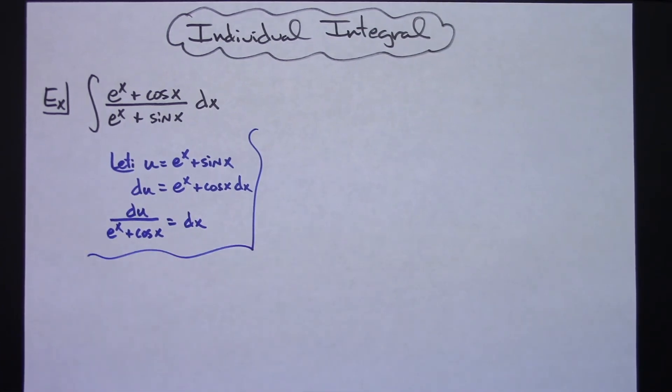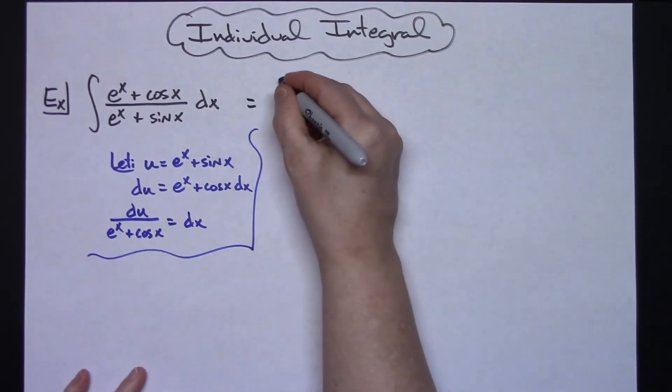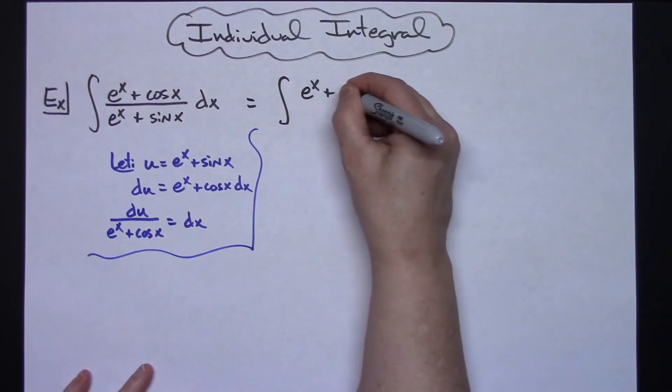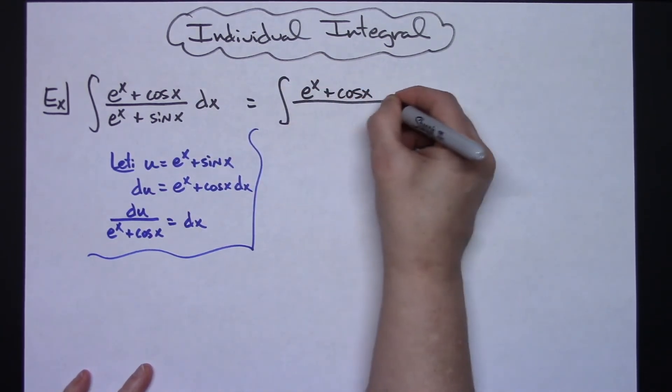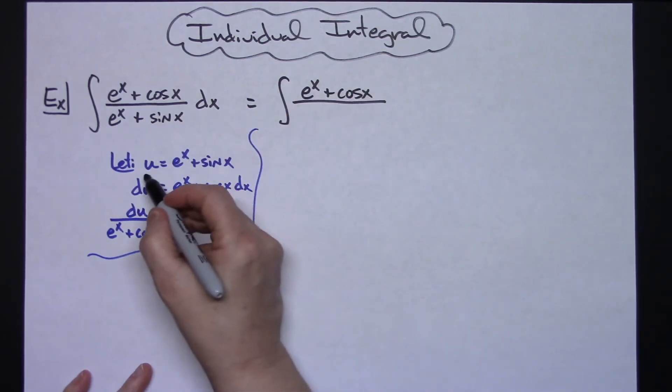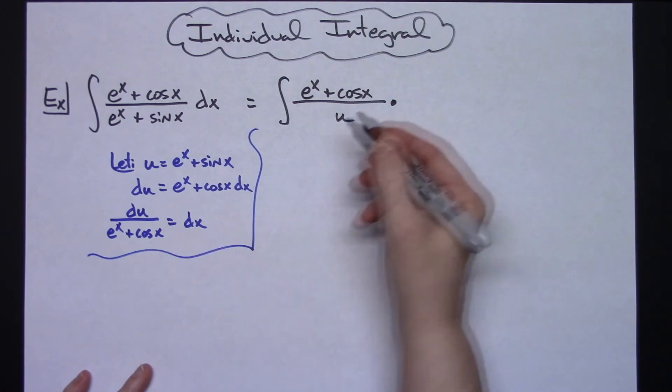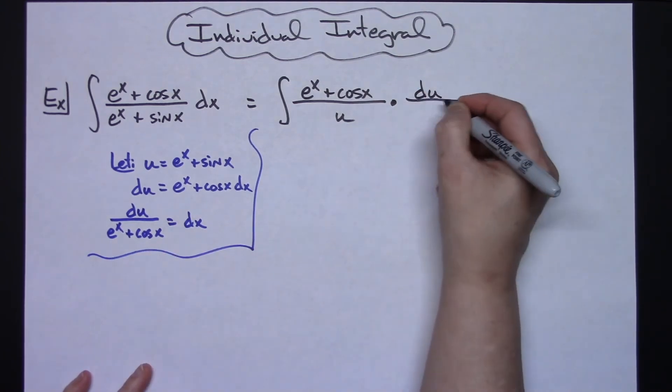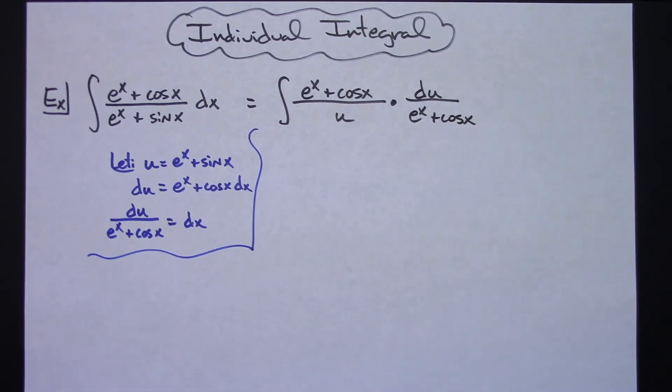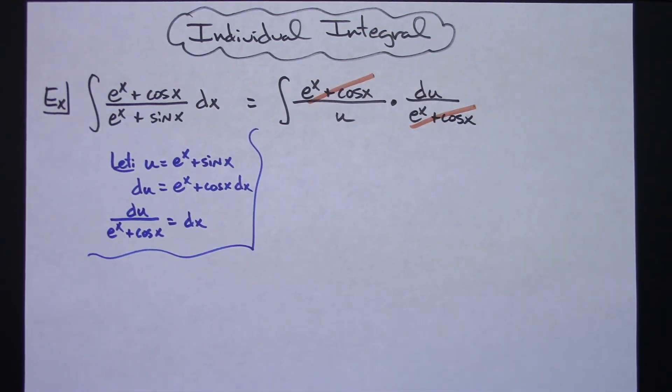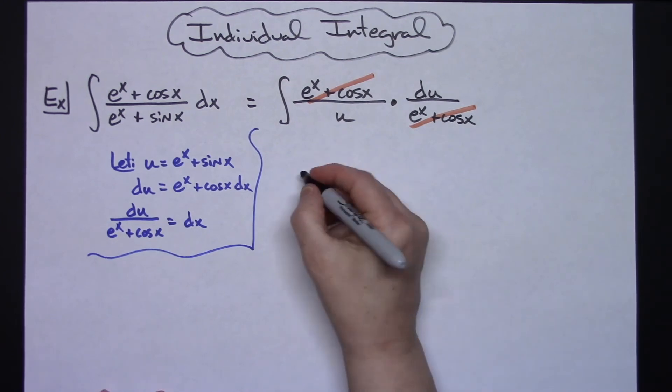And then we'll come back up and do our substitutions. The numerator will stay e to the x plus cosine x. We will replace that denominator with u, and we'll replace dx with du over e to the x plus cosine x. From there, we can see that those e to the x plus cosine x's cross out.